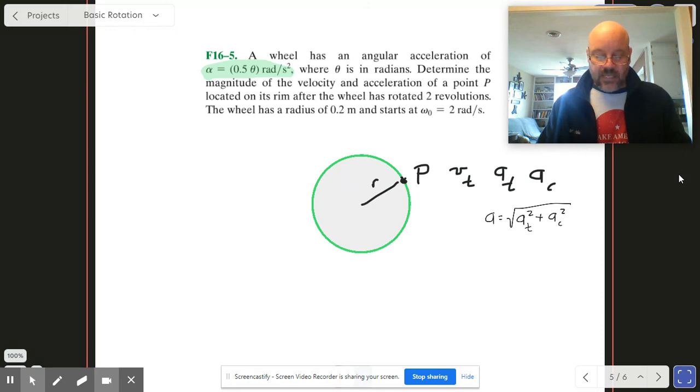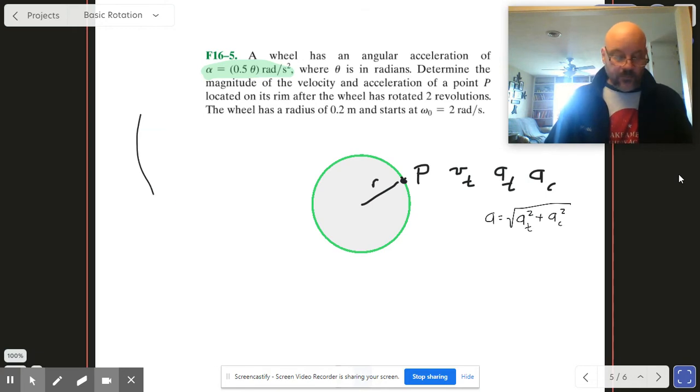Let's go ahead and get Vt out of this thing first. OK? Alpha is 0.5 theta. Well, how are we going to get omega out of that? Well, we're going to have to use our tools from differential equations again, which means that alpha is omega d omega d theta.